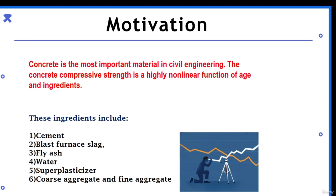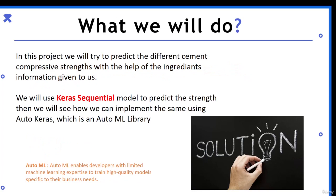We'll be predicting concrete compressive strength using ingredient information. We'll use deep learning methods — specifically the Keras Sequential model — and then implement the same thing using the AutoKeras library, which is an automated machine learning library.